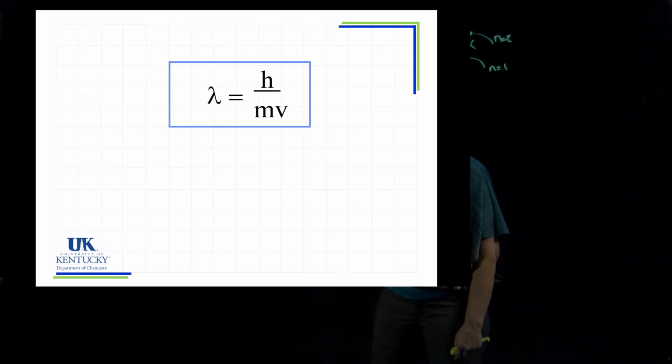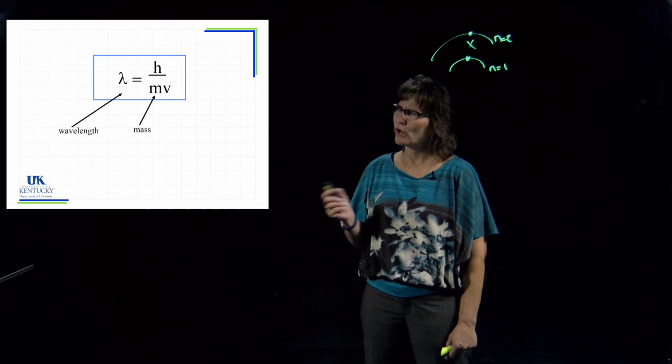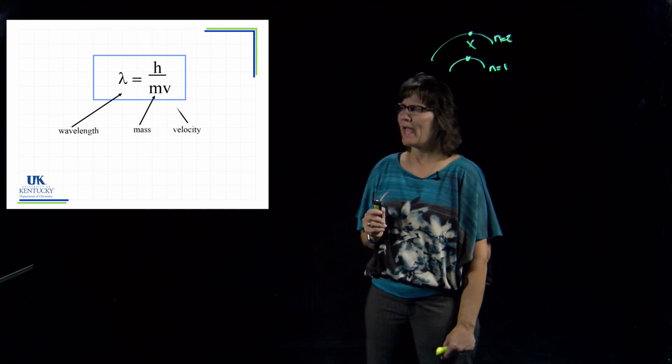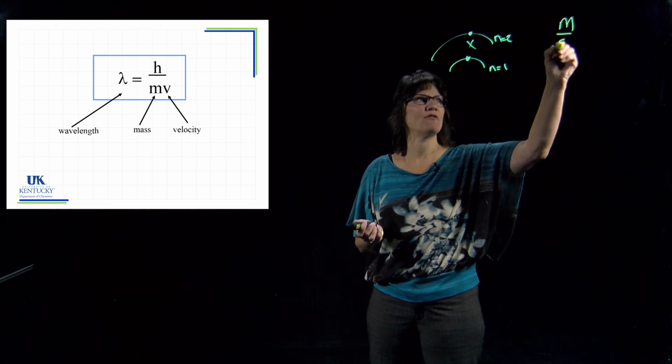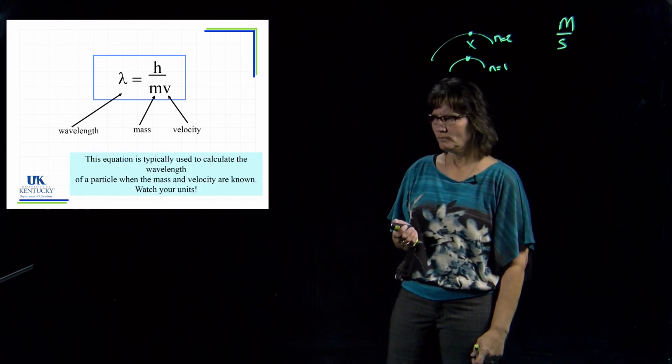So they did do some more studies with this and they came up with a relationship between wavelength of a particle and its mass and its velocity. With this equation we see Planck's constant, we see the same symbol for wavelength, we're going to have to put mass in there, and of course velocity. Velocity has units of meters per second—that's how fast they're traveling. So what do we use this equation for? This equation is typically used to calculate the wavelength of a particle as long as you know its mass, as long as you know the speed at which it's traveling.